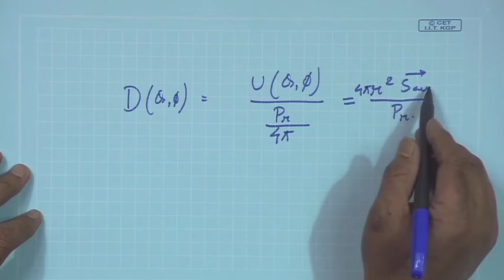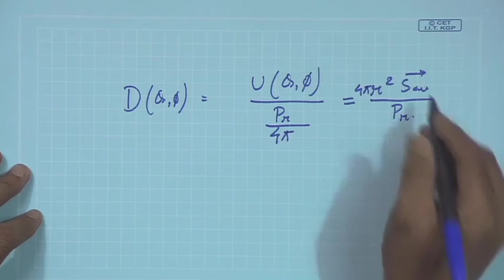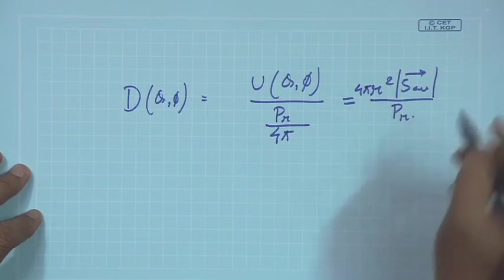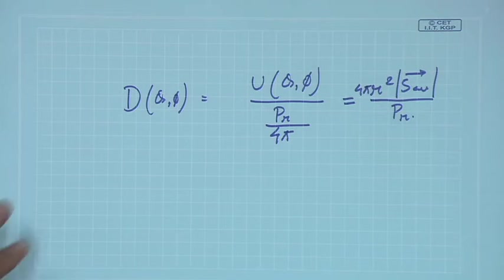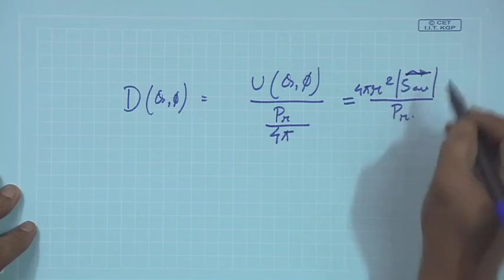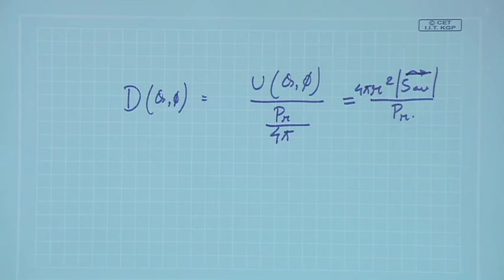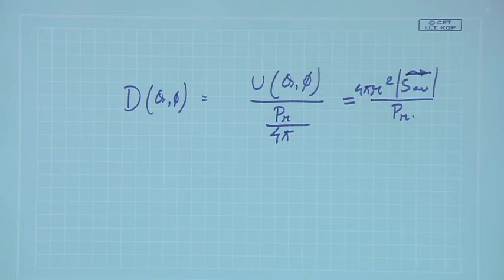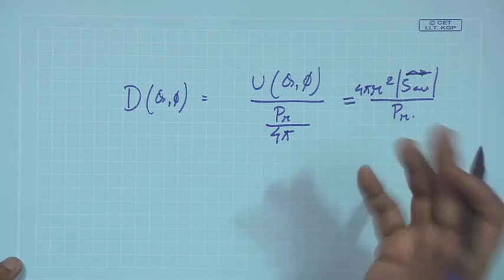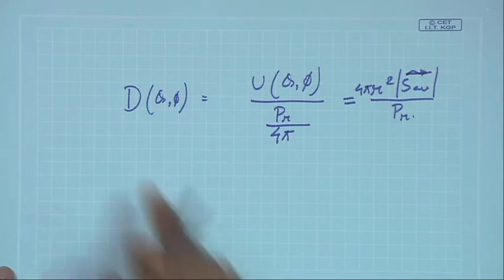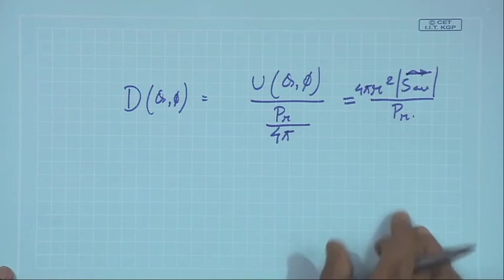Already we have seen that U(θ, φ) = r² × S_av. So directivity is D = 4π r² × |S_av| / P_r. Here S_av is a vector so we take the magnitude, since power is a scalar quantity.